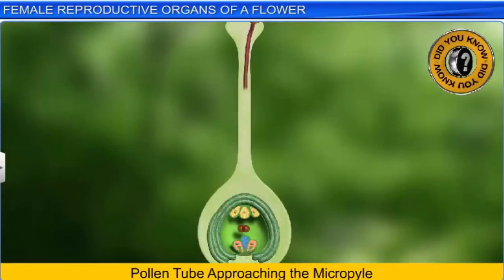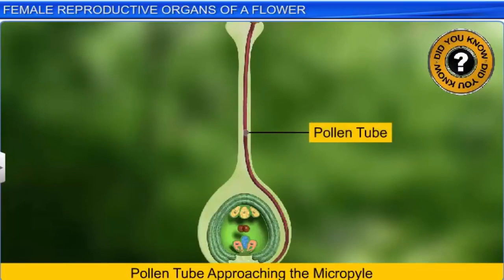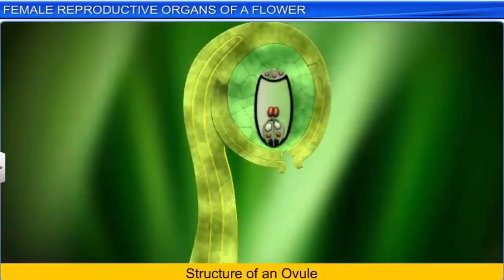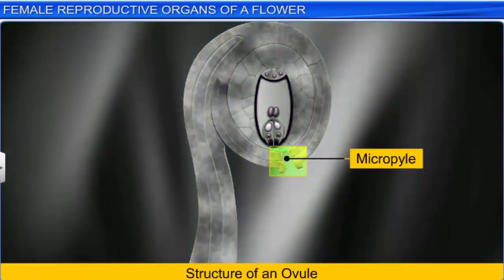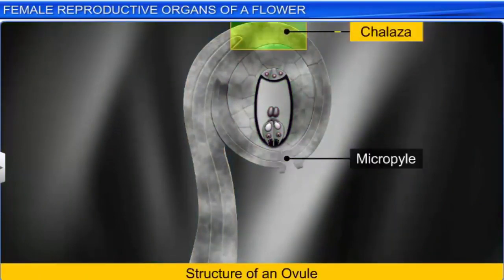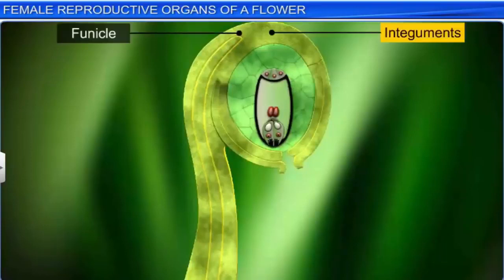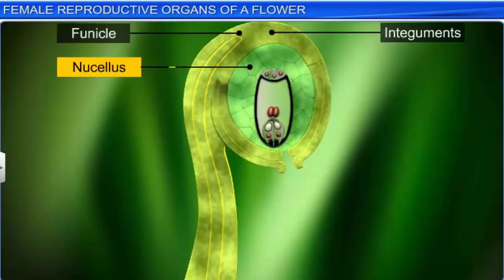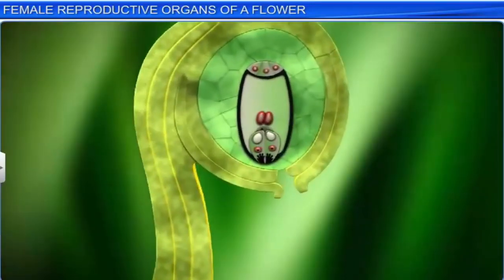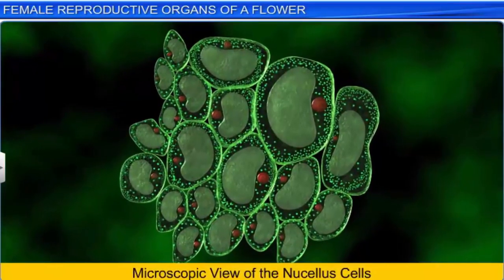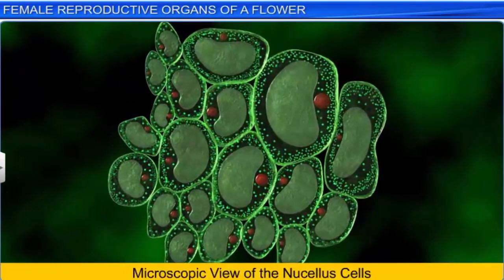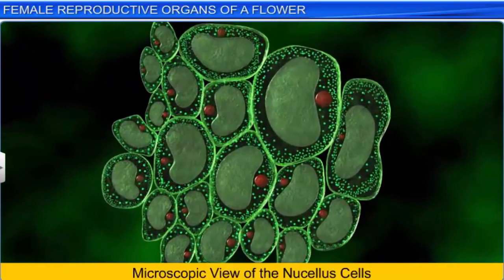The micropyle end acts as an entry point for the pollen tube during the process of fertilization. While the micropyle forms one end of the ovule, the chalaza forms the basal part of the ovule. At the chalazal region, we find that the funicle and integuments join the nucellus — the center region of the ovule that is made of a massive diploid, colorless, thin-walled parenchymatous cells containing food reserve materials.